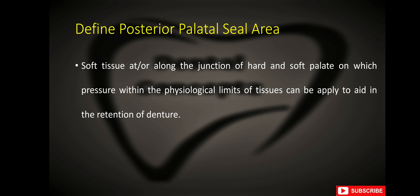What is posterior palatal seal area? Posterior palatal seal area is a soft tissue at or along the junction of hard and soft palate on which pressure within the physiological limits of tissues can be applied to aid in the retention of a denture.